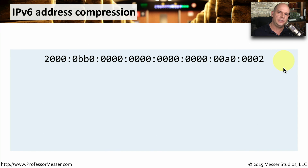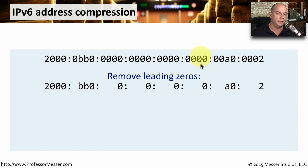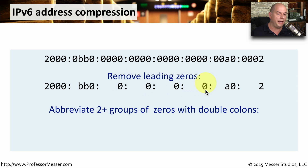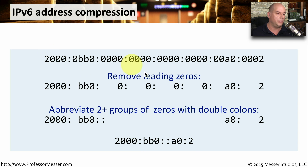Let's do that compression again to get the hang of this. Here's an IPv6 address — the first step is to remove the leading zeros. We have quite a few: some in front of the BB0, all of these groups have leading zeros, the two bytes of 00A0 lose their first two zeros, and the last two bytes lose three zeros. The next step is to find two or more consecutive zero groups — we have a group of four zeros here that we remove completely and replace with a double colon. Now we've compressed the entire address down to be much smaller.